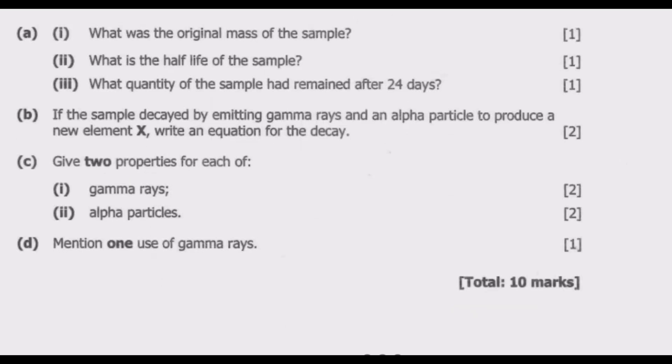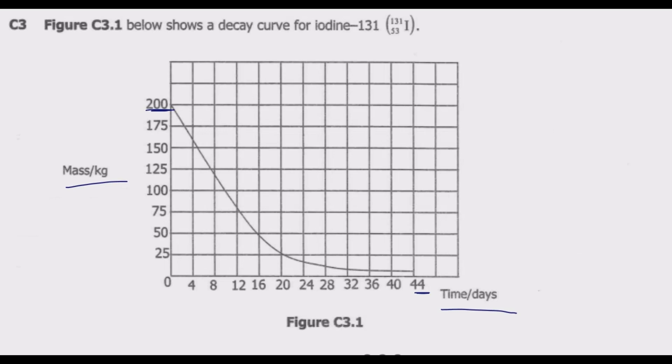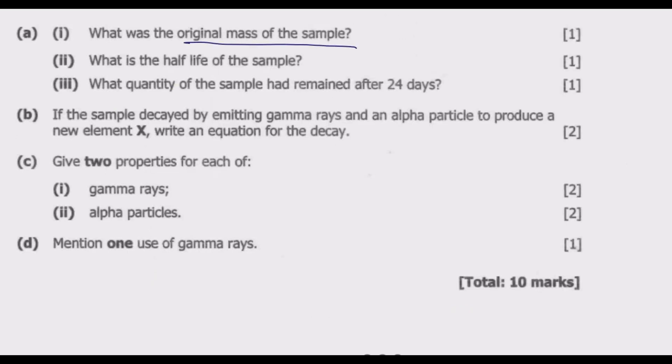Question A, Roman numeral 1: What was the original mass of the sample? The question requires us to find the original mass of the sample. The sample in this case is iodine-131. At the beginning when the time is zero days, the mass is 200. That 200 is the original mass of the sample - 200 kg.